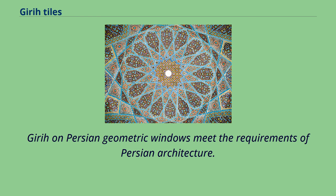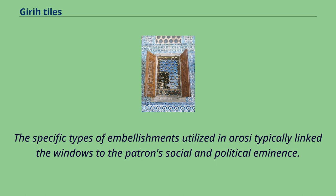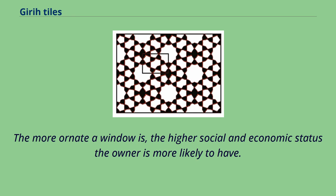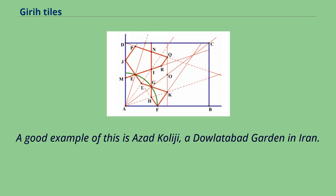The girih has been widely applied in architecture. Girih on Persian geometric windows meet the requirements of Persian architecture. The specific types of embellishments utilized typically link the windows to the patron's social and political eminence. The more ornate a window is, the higher social and economic status the owner is more likely to have.